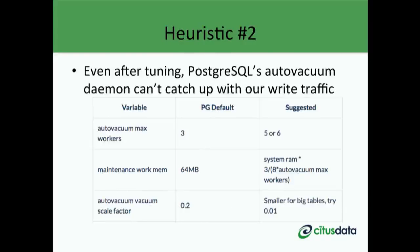A second heuristic that usually applies to OLTP workloads is auto-vacuum — this is Postgres specific. Postgres uses auto-vacuum daemons to clean up load caused by MVCC, and the default vacuum settings are too conservative to begin with. If you haven't tuned your auto-vacuum settings, look into making them more aggressive. If you have and are still experiencing performance issues due to vacuum, it may be a good time to start thinking about scaling out.